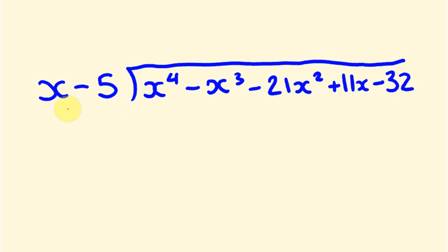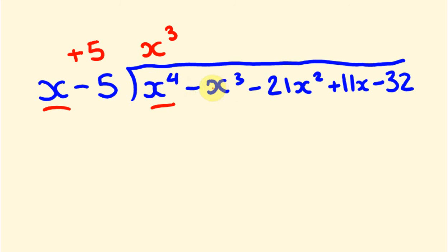First off, x goes into x to the power of 4 a total of x cubed times, so our first answer term is x cubed. The next answer will be x squared, then x to the power of 1, then just a constant, and then our remainder. To get the next part, we look at the inverse of minus 5, which is positive 5. Positive 5 times x cubed is positive 5x cubed, and we add that to minus x cubed to get 4x cubed — but we drop it down a power, so that's positive 4 for the x squared term.